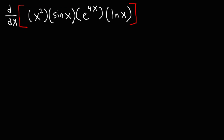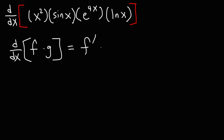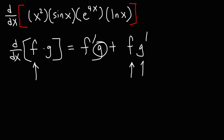We need to use the product rule. The derivative of f times g — if we have two terms — is going to be f prime g plus f g prime. You take the derivative of the first part leaving the second part the same, and then you leave the first part the same, taking the derivative of the second part.